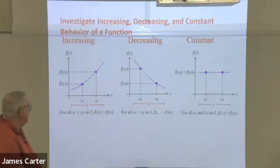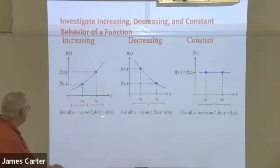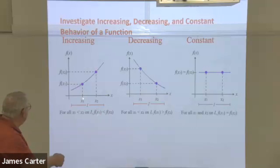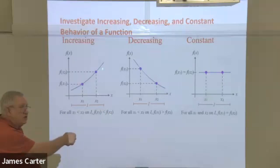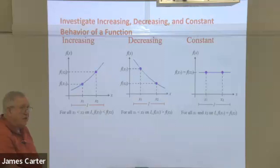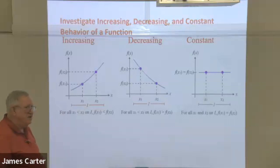The technical definition: the y value resulting from x₁ has to be less than the y value resulting from x₂ — because this y value is less than that one, we call it increasing. The main thing you need to do is see if it's going uphill, downhill, or staying the same.